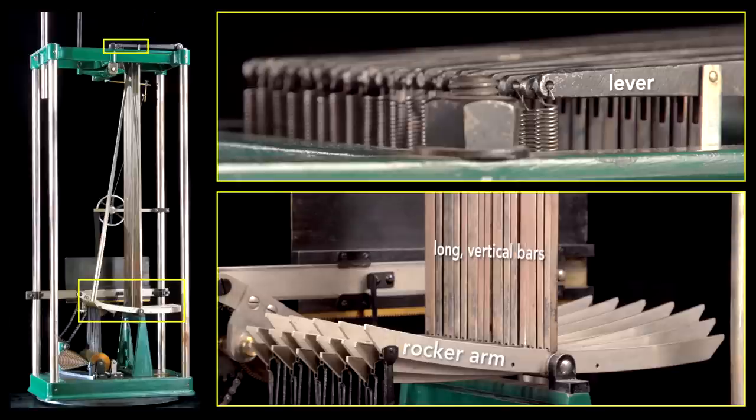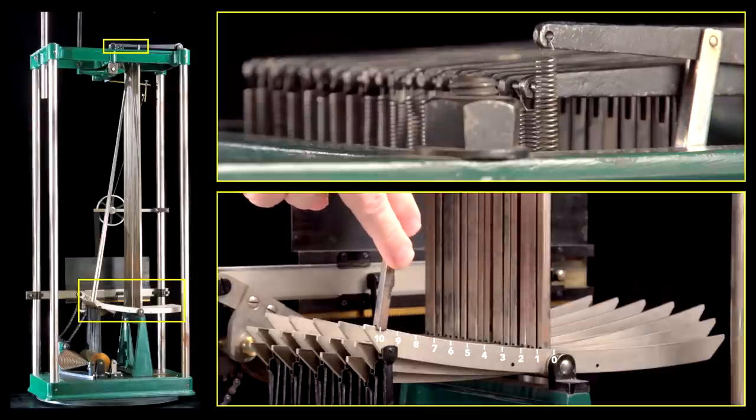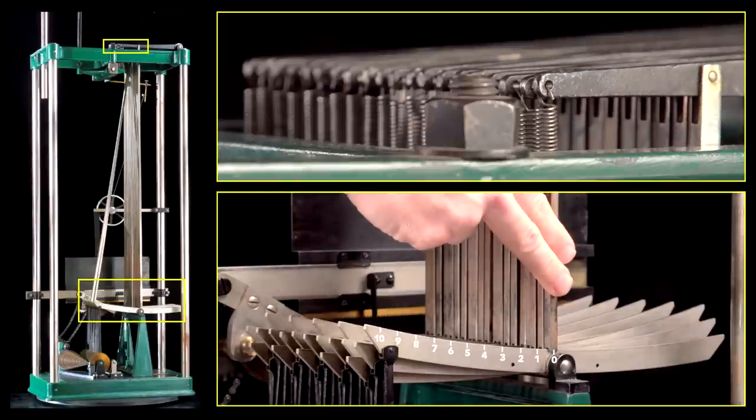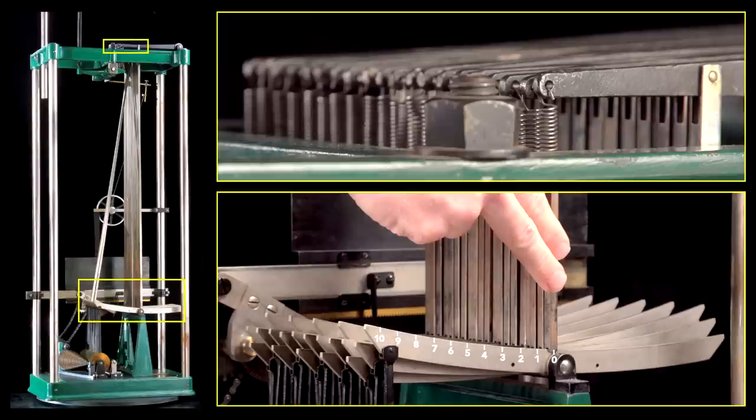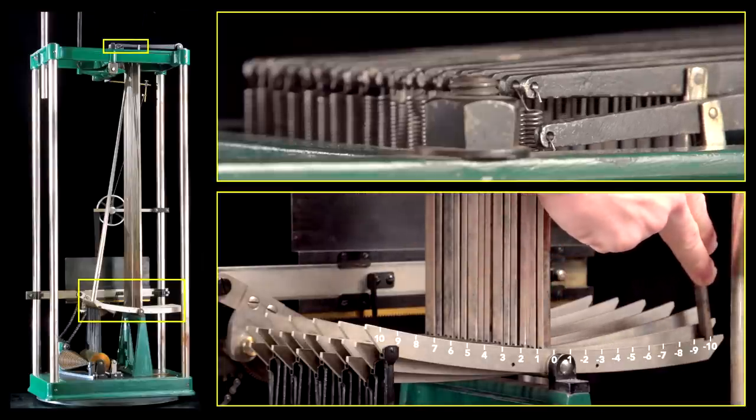The position of the rocker arms on the bar determines the coefficient. As I slide this bar to the edge of the rocker arm, the lever at top rises, that's a coefficient of plus 10. When I return it to the rocker arm's pivot, the lever returns to its original position, a coefficient of zero. And as I continue to slide to the opposite edge, the lever drops, a coefficient of minus 10.